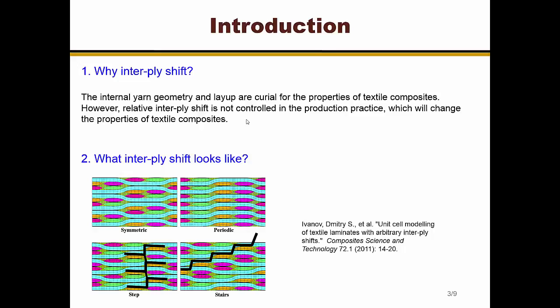So why interplay shifts? We know the internal geometry of the yarn and the layup are crucial for the properties of the textile composites. But during the manufacturing, the relative interplay shift is not controlled, which means the final configuration of the woven composites are very possible to have this interplay shift problem. And it will affect the final properties of the material. So that's why we care about this problem.